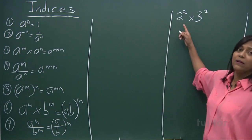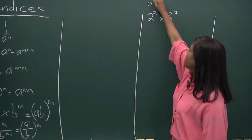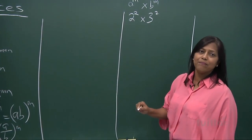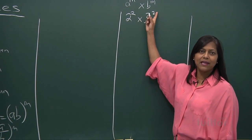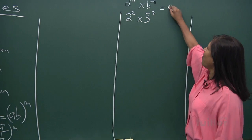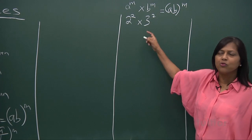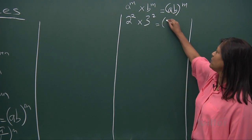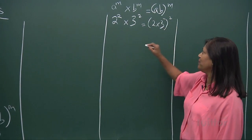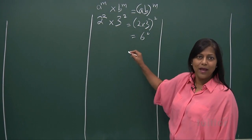For example, 2 squared times 3 squared — this is your a and that's your m, and this is your b and this is your m. They share the same powers. So applying the law, we get 2 times 3 with the common power of 2, which gives us 6 squared, and 6 squared is 36.